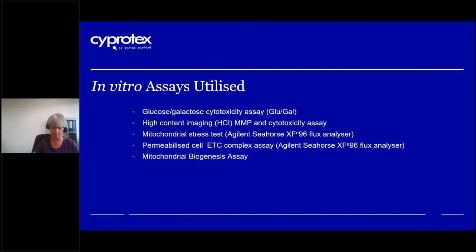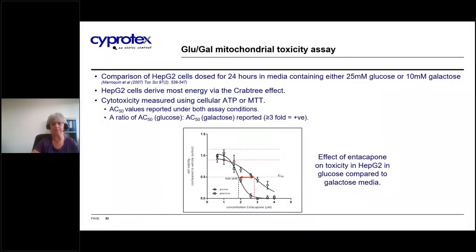All this implies that early detection of compounds which affect mitochondrial function would be beneficial in drug discovery. A number of approaches have been developed which can be incorporated, and I will present some typical approaches now in more detail — some of which have been specifically developed for anti-infectives. The first and simplest is the GluGal assay, first described in 2007 by Marroquin.